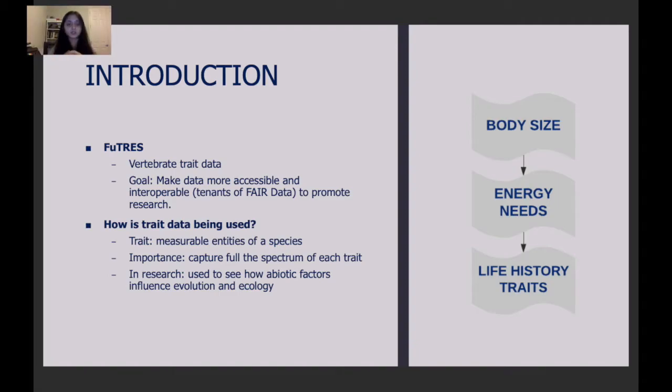To the right, you'll see a flow chart which shows body size, which directly correlates to the energy needs of a species, which directly correlates to the life history traits of a species. Life history traits can then be tied together to find the evolutionary and ecological patterns within a species.